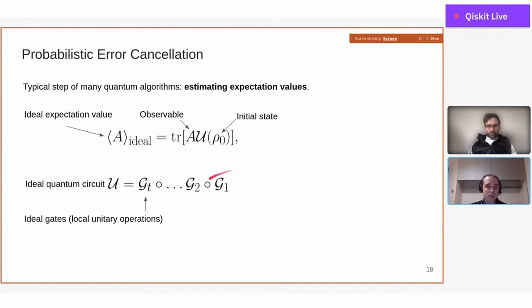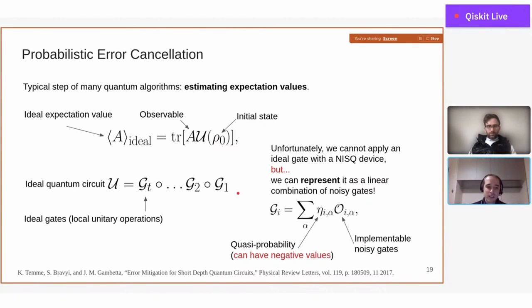Unfortunately, we cannot apply these ideal gates because we have noisy hardware, and so the first key idea of probabilistic error cancellation is to expand an ideal gate as a linear combination of noisy gates. Mathematically, you can think of G as a super operator acting on the space of density matrices. Basically it's a matrix, a big matrix, not actually not so big—it's a gate and it's unitary.